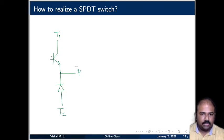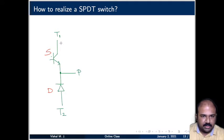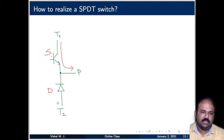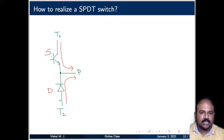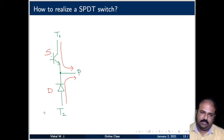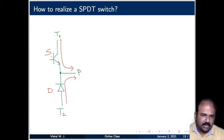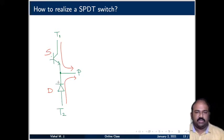How can P be connected to T1? Once you turn on this switch — now we have a switch and a diode — current can flow through the switch, which means T1 and P are connected. When current is flowing through the diode, T2 and P get connected. So P can get connected to T1 through the switch or P can get connected to T2 through the diode. Thus the pole can get connected to T1 or T2. That is the basis of the SPDT switch.